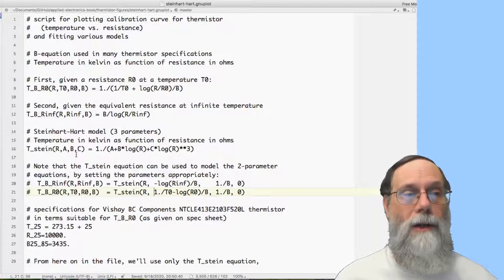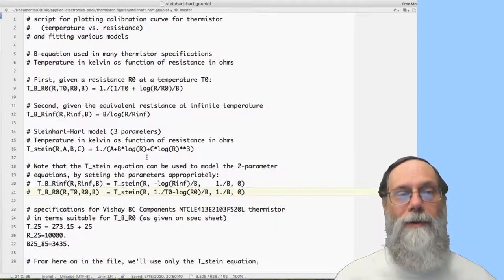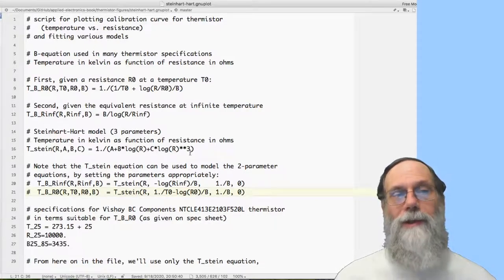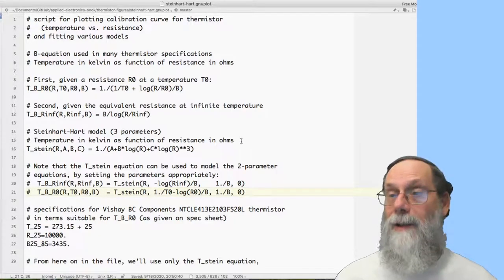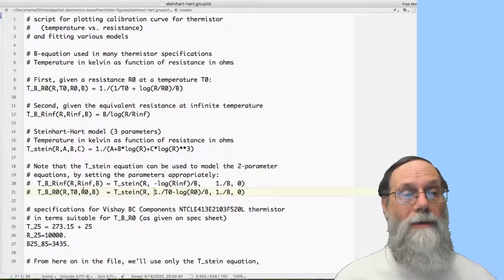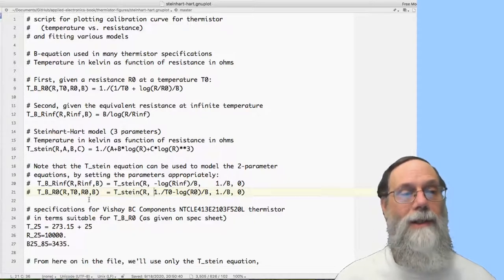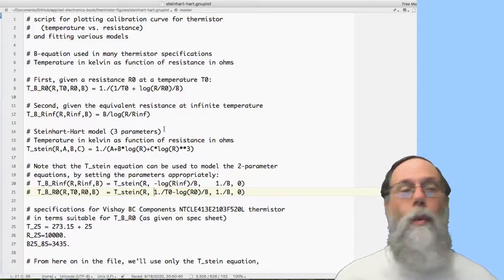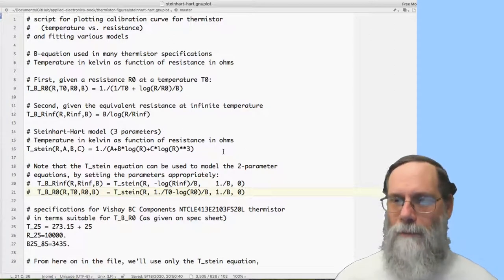Then the Steinhardt-Hart model, I've here used three parameters, A, B, and C. And it's just one over and then the A plus B times log of the resistance plus C times log of the resistance cubed. So that's the standard Steinhardt-Hart model. And it generalizes the other two so that I can define this function in terms of the Steinhardt-Hart function either of these two earlier ones. So what I'm going to do for all the model fitting is just use the Steinhardt-Hart formulation throughout.